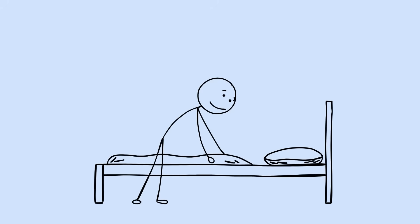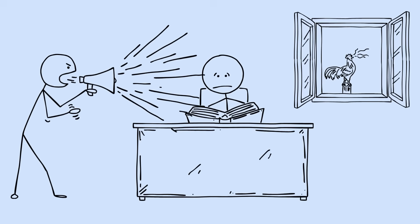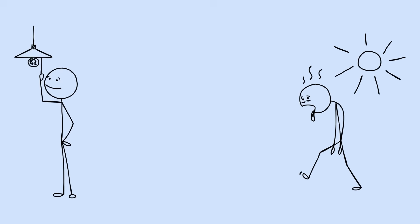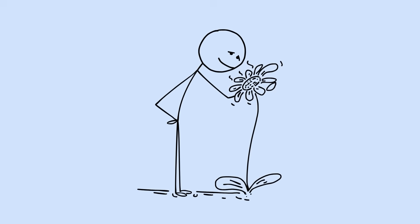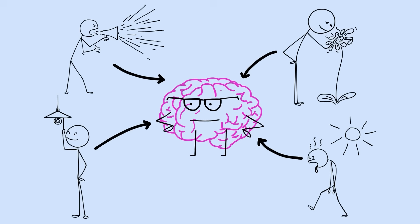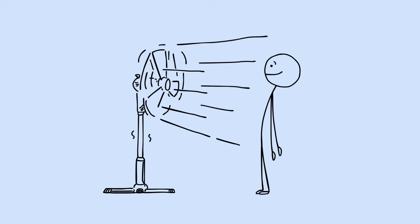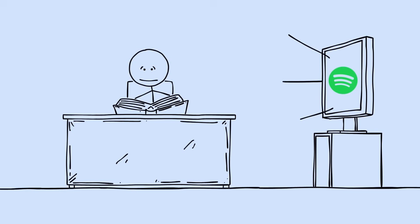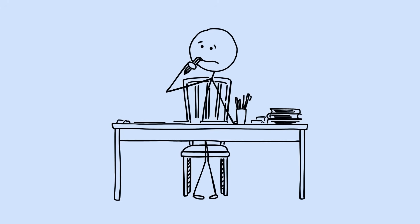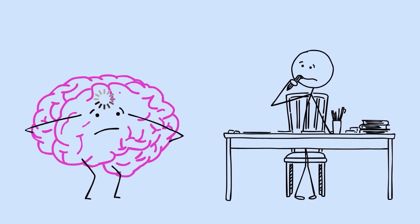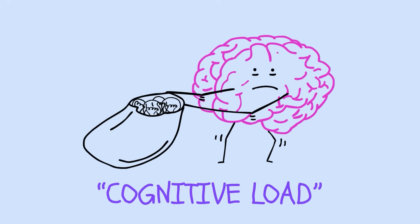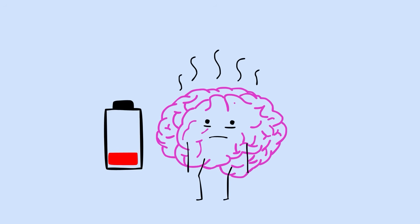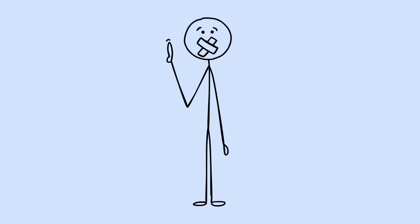We optimize our bedrooms for sleep, but never optimize our study spaces for learning. Temperature, lighting, noise levels, and even smell all impact cognitive performance. Here's what actually works. Cool temperatures keep you alert. Natural light reduces eye strain and improves focus. Consistent background noise can enhance concentration, but only if it's truly consistent. The clutter on your desk creates clutter in your mind. Your brain processes visual chaos as cognitive load, leaving less mental energy for actual learning.